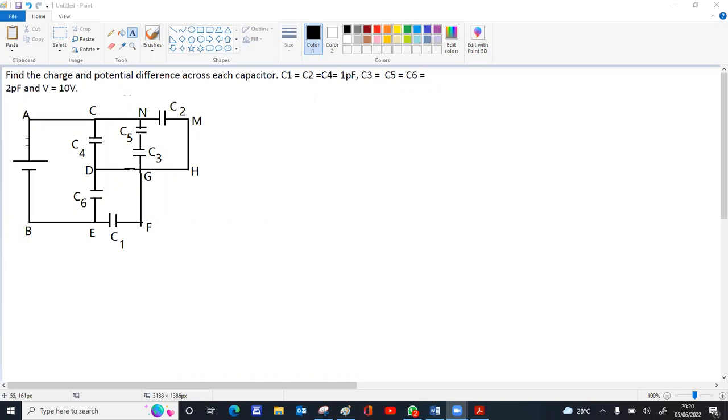In these type of questions, the best option is to reduce points without any devices in between. Like A and C don't have any capacitor, resistor, or cell in between. So you can reduce A and C as a single point at A.